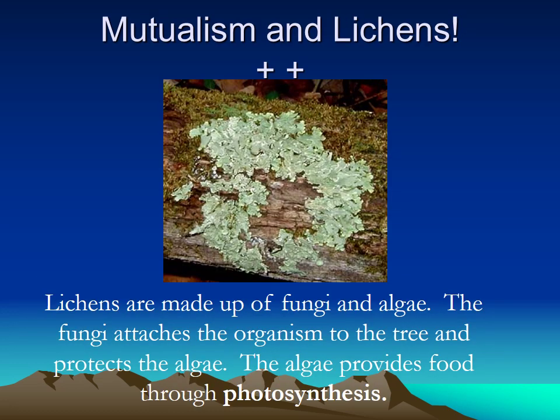Lichens are made up of fungi and algae. The fungi attaches the organism to the tree and protects the algae, and the algae provides food through photosynthesis. One gets protection, the other gets food — mutualism, plus-plus. Both of them get something good.